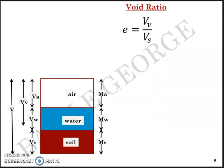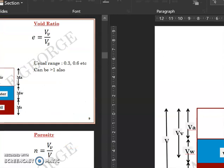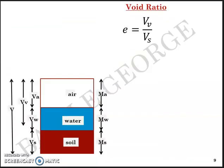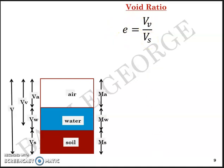The first term based on the three-phase system diagram is voids ratio. Voids ratio is the volume of voids divided by the volume of solids — that is, Vv divided by Vs — and is represented by the symbol 'e' (small letter e). The usual range of voids ratio for soil is 0.3 to 0.9, though it can be even greater than 1.